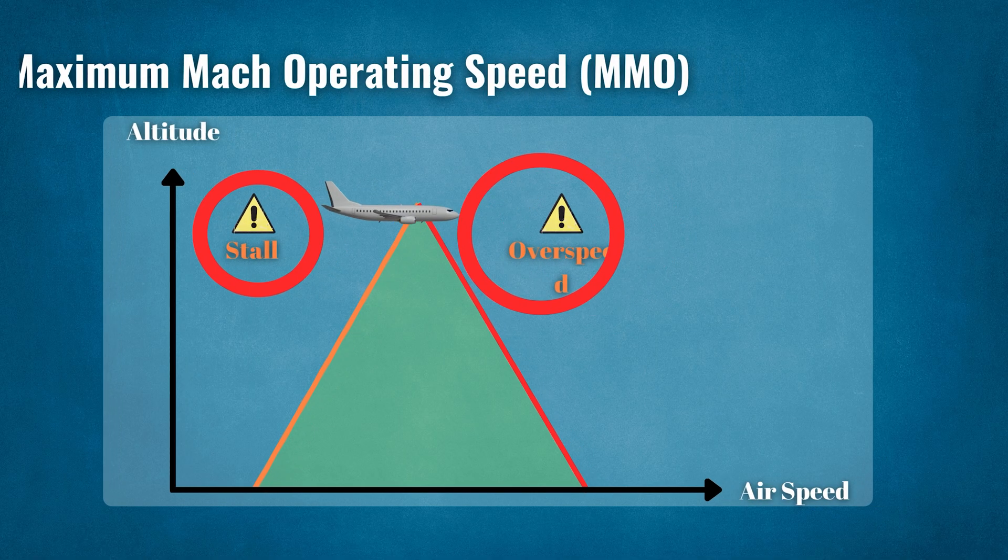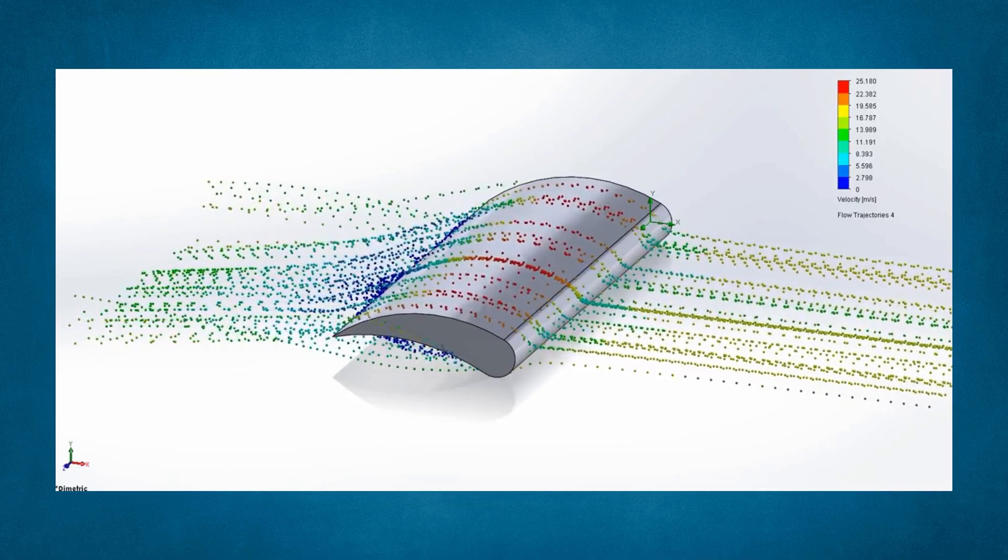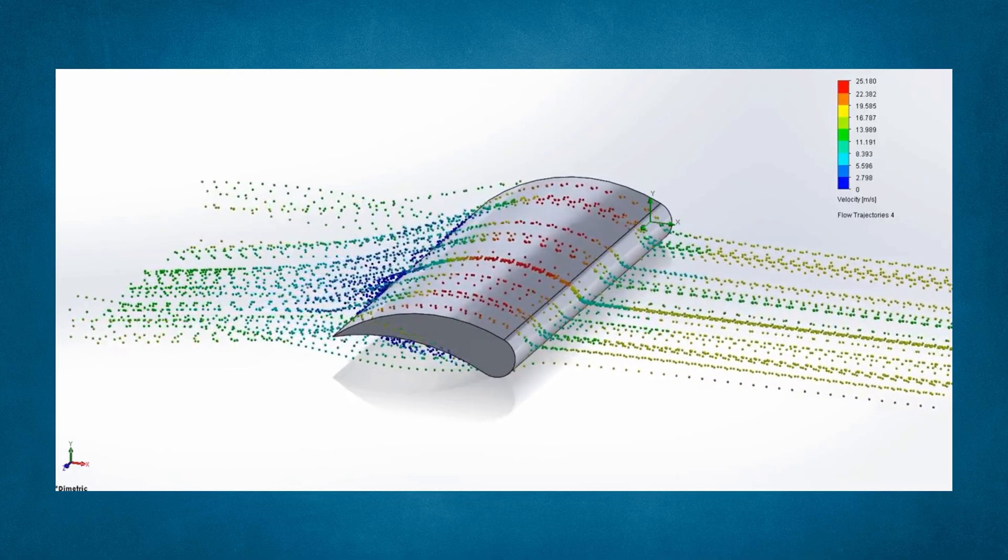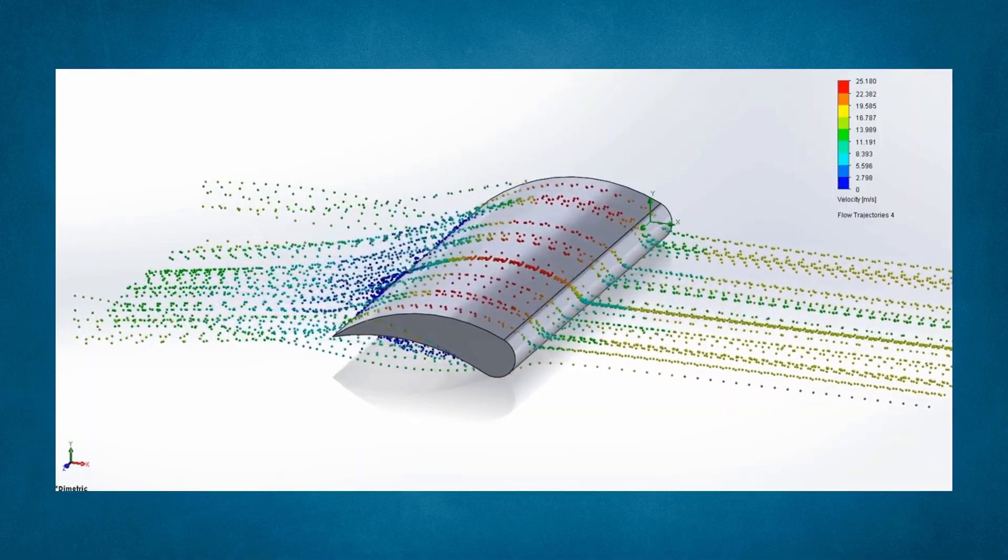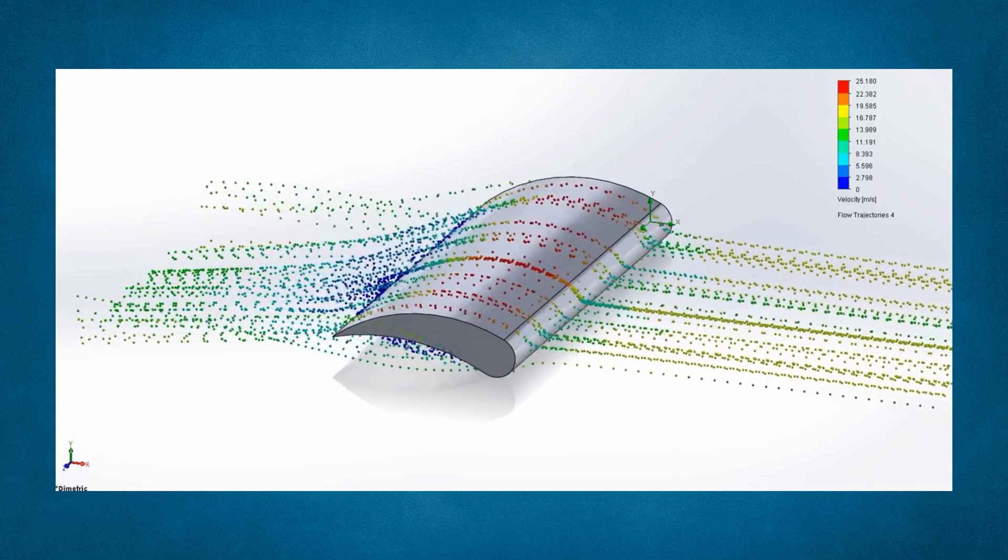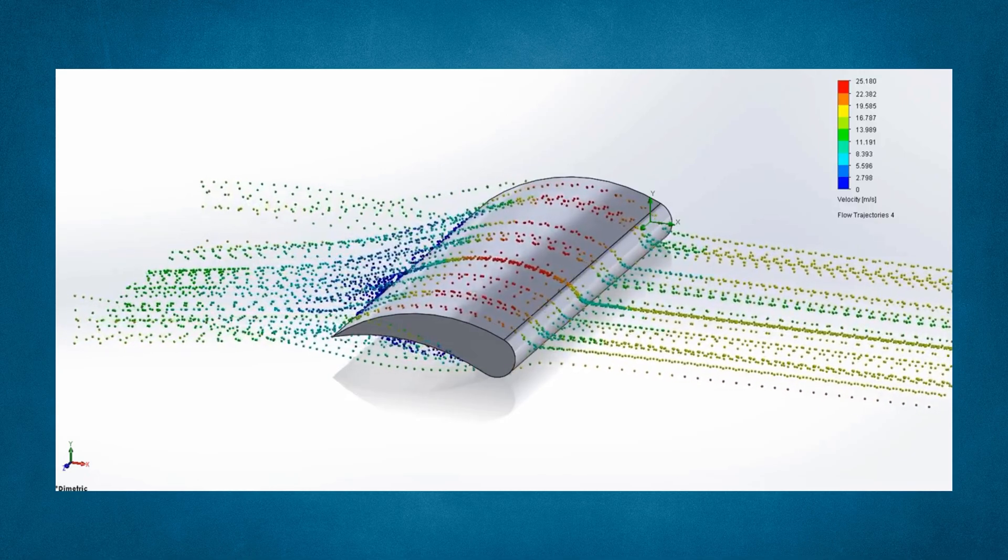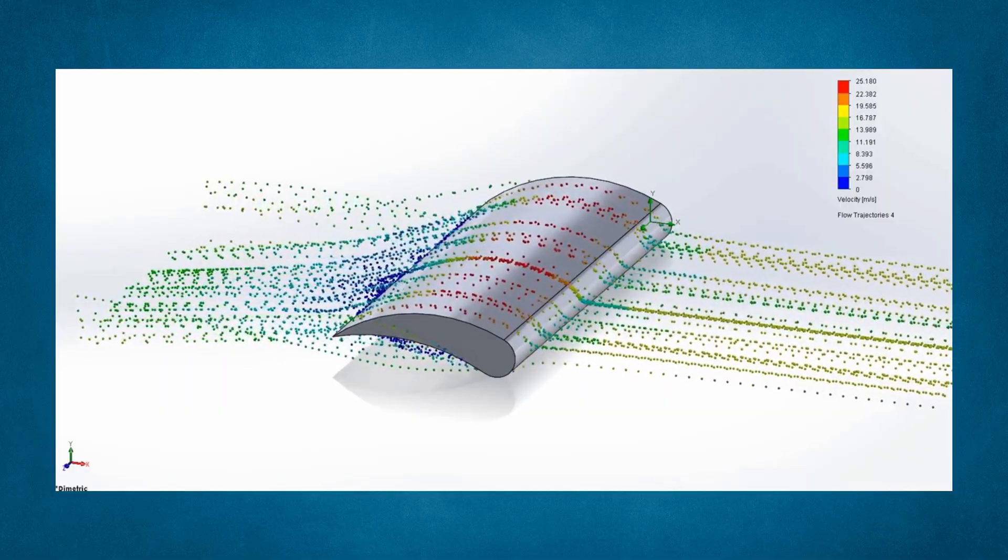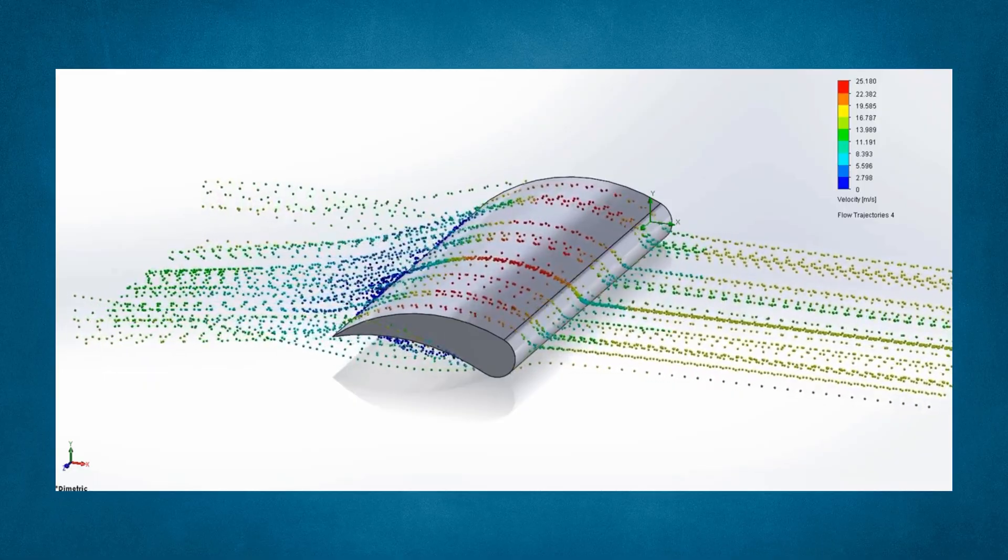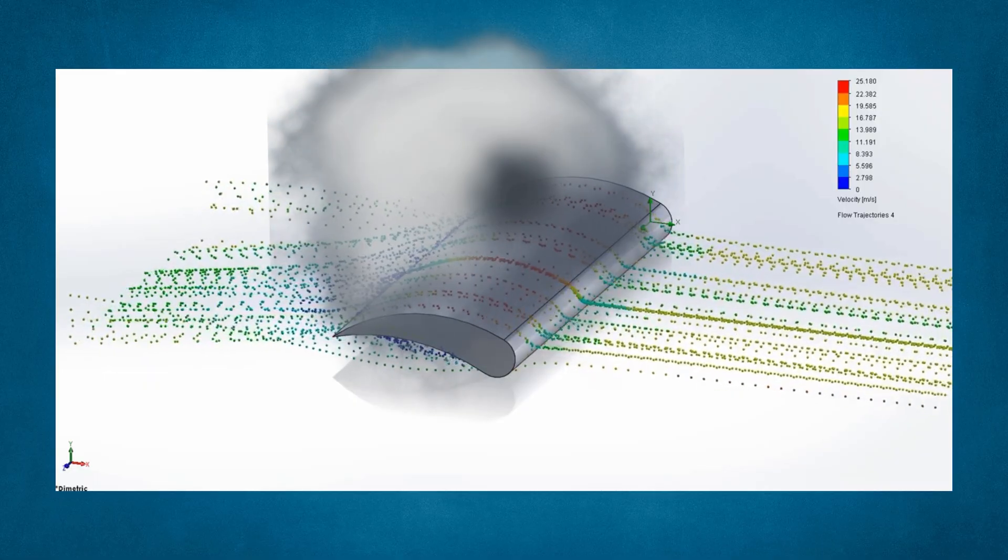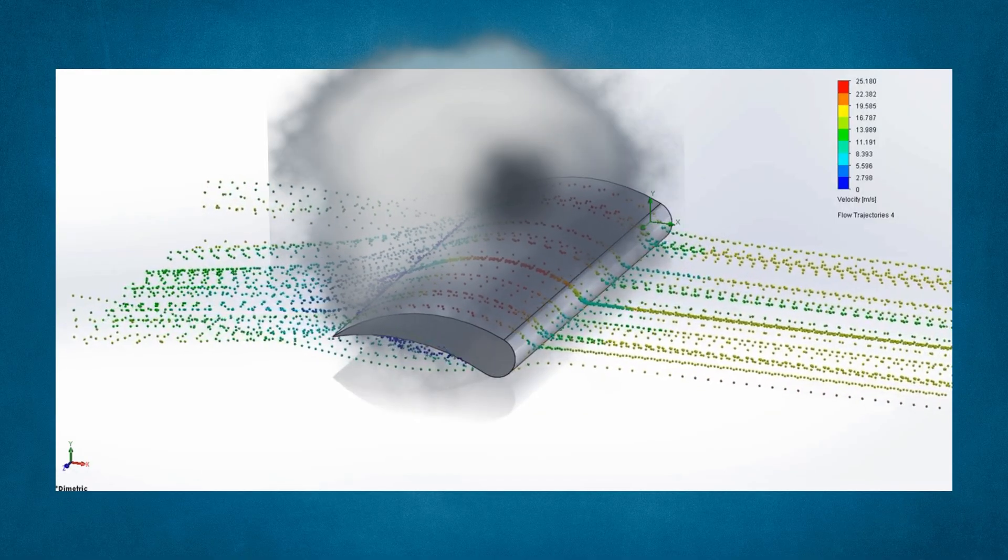While most pilots are familiar with the aerodynamics of a low speed buffet or stall, the high speed buffet and Mach limit may be less familiar to some. Aircraft have a speed known as Mach critical number. At this speed, the air over at least one part of the airfoil, usually the top of the wings, is reaching supersonic speeds. The shock waves generated by the supersonic speeds creates airflow separation and drag.